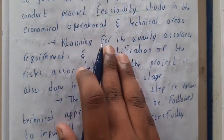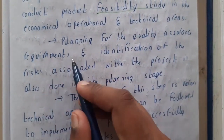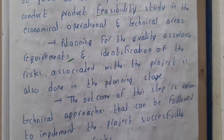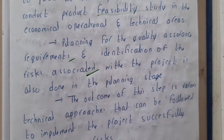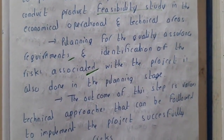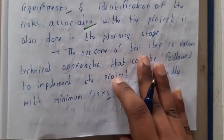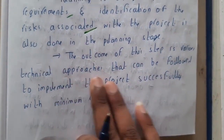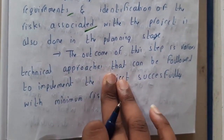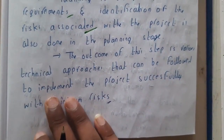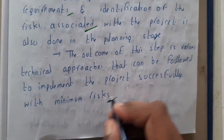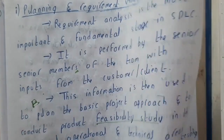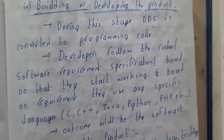After feasibility testing, you will plan for the quality assurance of requirements — analyzing whether the requirements are sufficient and whether there are any risks associated with the project. The outcome of this step will be various technical approaches that can be followed to implement the project successfully with minimum risk, giving you multiple process options.